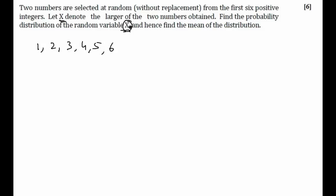Our random variable X is the larger of the two numbers selected. X can take different values — X can be equal to 2, since it is possible that the larger of the two numbers is 2. It cannot be equal to 1, ever, because if we are selecting two numbers without replacement, one will always be smaller than the other. So X can take values 2, 3, 4, 5, or 6.